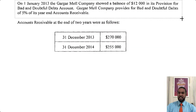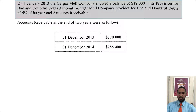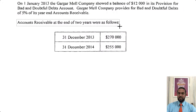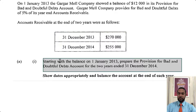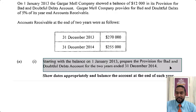Alright, so we're going to take a read of the question. It says on 1 Jan 2013, the Gargamel Company showed a balance of $12,000 in its provision for bad and doubtful debts account. Gargamel Company provides for bad and doubtful debts of 5% of its year-end receivables. Accounts receivable at the end of two years were as follows: 31st December 2013, $270,000; 31st December 2014, $255,000. Starting with the balance on 1 Jan 2013, prepare the provision for bad and doubtful debts account for the two years ended 31st December 2014, show dates appropriately, and balance the account at the end of each year.